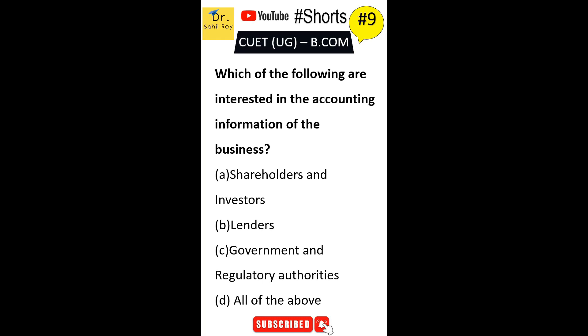Which of the following are interested in the accounting information of the business? First option is shareholders and investors. Second option is lenders. Third option is government and regulatory authorities. Fourth option is all of the above. The correct answer is Option D — shareholders, investors, lenders, and government or regulatory bodies are all interested. All of the above is the correct answer.